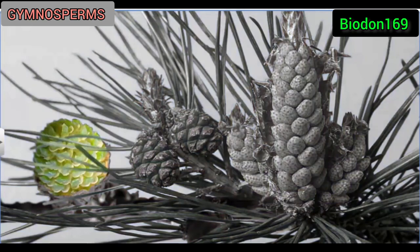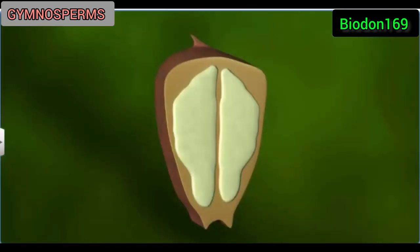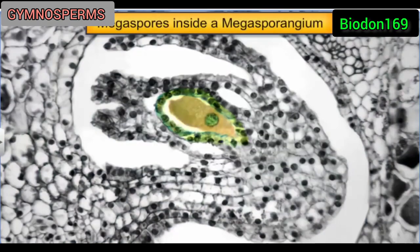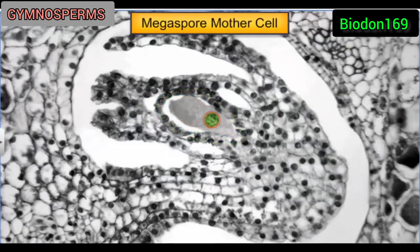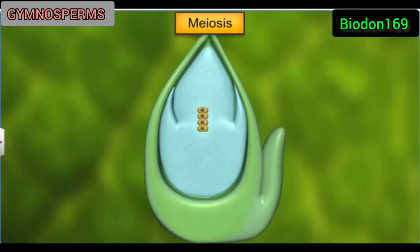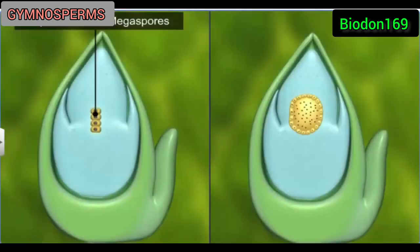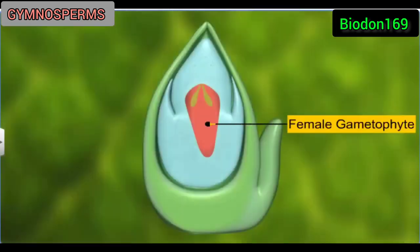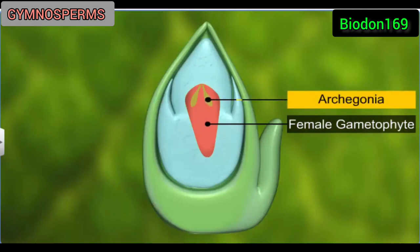The female strobulus is a cluster of megasporophylls, which bears ovules containing the megasporangium, or nucellus. The megasporangium, surrounded by a layer of integuments, produces haploid megaspores. A megaspore mother cell undergoes meiosis to give rise to four haploid megaspores. One of these spores develops into a multicellular female gametophyte, which further bears two or three female sex organs called archegonia, which develop inside the ovule.